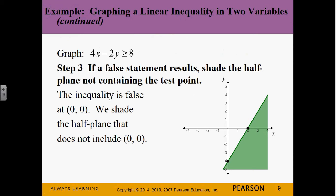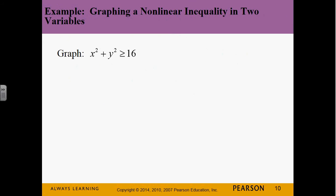Both methods are valid — completely up to you which one you use. Some people continue to use the test point method simply because it's what they've always known. There's no wrong way here — well, there is a wrong way, but neither of these are it. Both of them are right. Just drawing a line and randomly shading stuff — that's wrong.